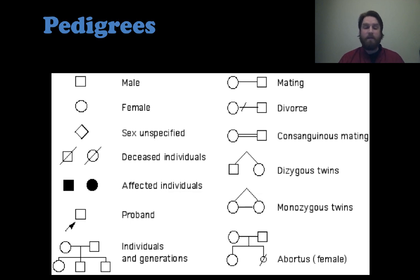If you put a line through the individual, that means they are deceased. If they are shaded, remember that means they are affected. The word proband here, that's just an arrow pointing to whatever individual that is. If you put an arrow pointing to it, that just means that is the person that started this whole thing. So if you had somebody that had a trait that we wanted to trace back, we would put an arrow next to them because they were the ones that caused the pedigree to be made. That one's not as important for you guys here. Then you have individuals and generations.